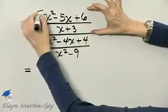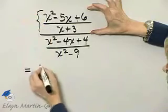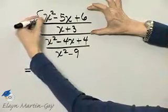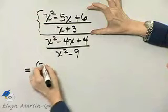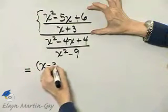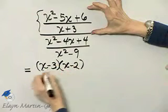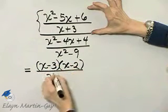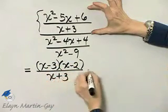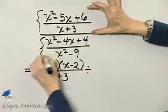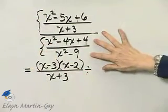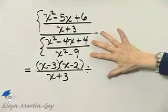So it's this numerator, now I'll factor that numerator of the numerator as x minus 3 times x minus 2, I'll let you check me, over x plus 3 divided by the denominator of the complex fraction. But remember,